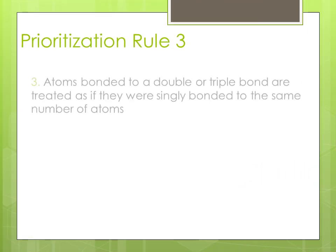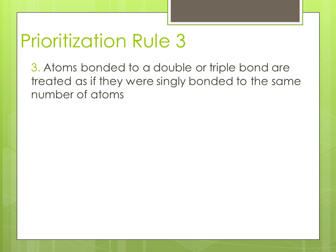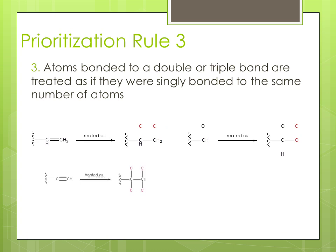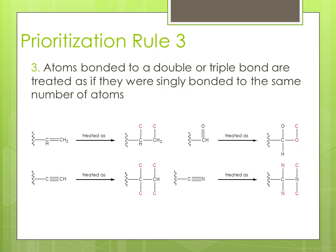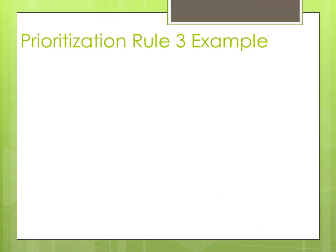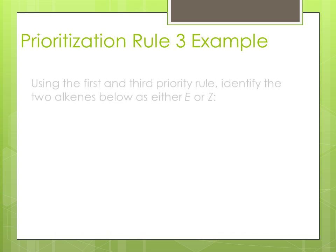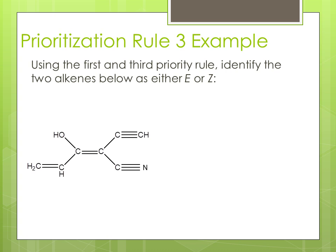Prioritization Rule 3. Atoms bonded to a double or triple bond are treated as if they are singly bonded to the same number of atoms. Here are a few examples. Look at this organic molecule. Would you designate it as an E or a Z? Using the priority rules, notice that these two substituents have a higher priority than the other substituents, and because these substituents are on the opposite side of the double bond, this molecule will be designated as an E configuration.